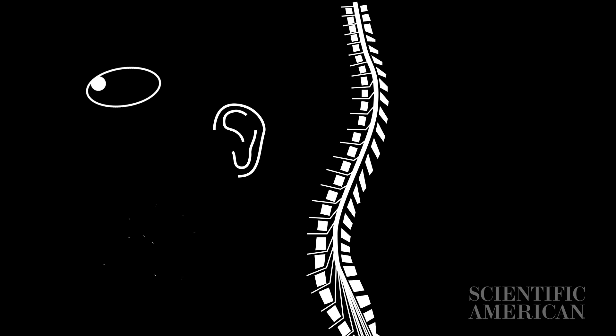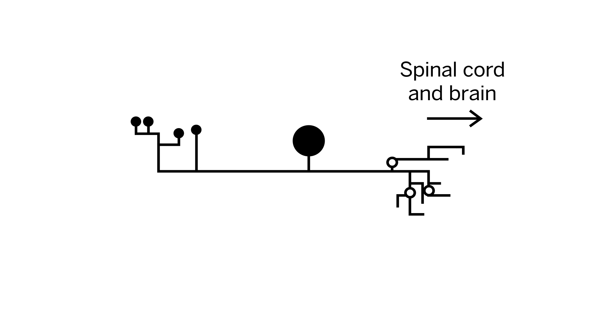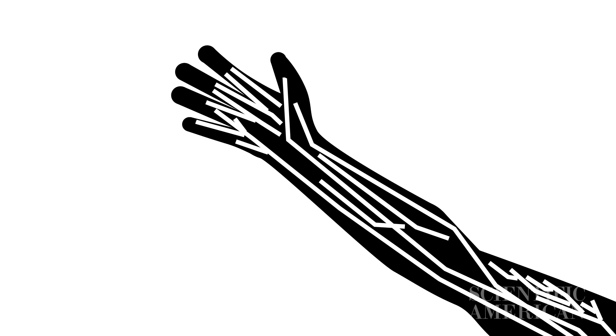Whenever we see, hear, or otherwise perceive the world, thousands of sensory neurons send signals to our spinal cord and brain. And thanks to other neurons, we're able to make sense of those perceptions and react accordingly.